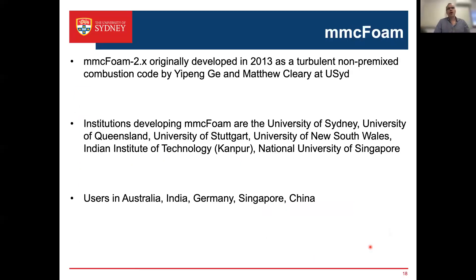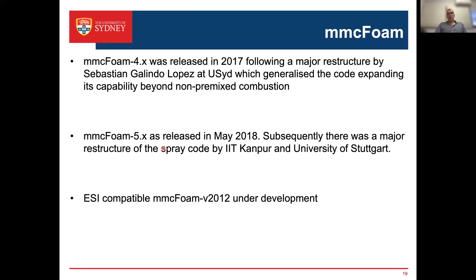MMC-Foam, compatible with OpenFOAM version 2.x, was originally developed in 2013 at the University of Sydney by PhD student Yifong Ge and Professor Cleary. It has evolved rapidly with developers at the University of Sydney, Queensland, Stuttgart, University of New South Wales, IIT Kanpur, and the National University of Singapore. In 2017, version 4.x was released after a major restructure by Sebastian Galindo-Lopez, which generalized the code and expanded its capability beyond non-premixed combustion.